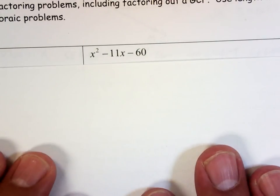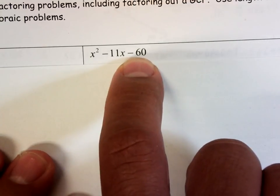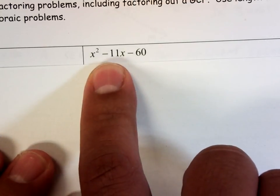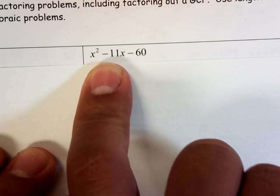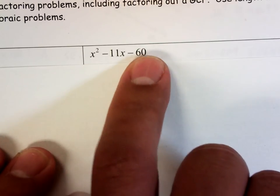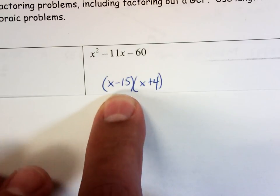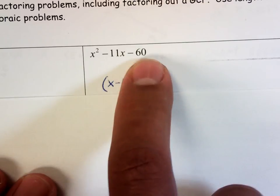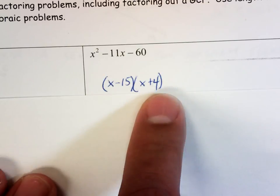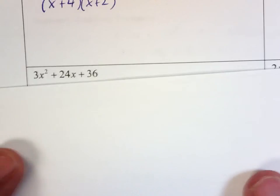Okay, what two numbers multiply together to give me negative 60? And when I add them up, give me negative 11. So there's a few different numbers that multiply to give you 60 and negative 60. Which two multiply together to give you negative 60 and add up to give you negative 11? Negative 15 and 4. Negative 15 times 4 gives me negative 60. Negative 15 plus 4 gives me negative 11.